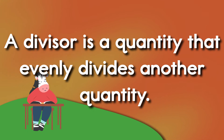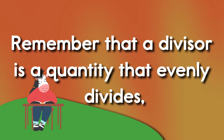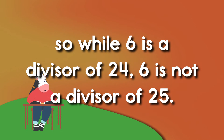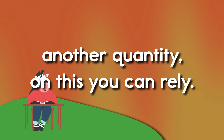A divisor is a quantity that evenly divides another quantity. In 24 divided by 6 equals 4, the number 6 is the divisor. Remember that a divisor is a quantity that evenly divides — so while 6 is a divisor of 24, 6 is not a divisor of 25.